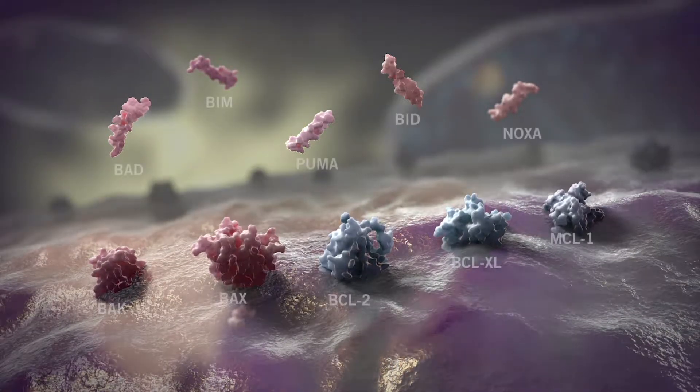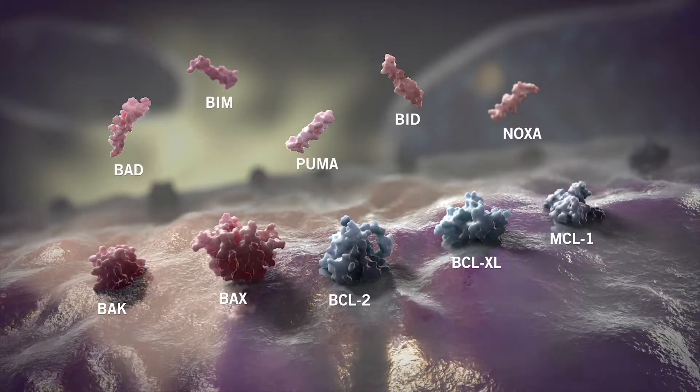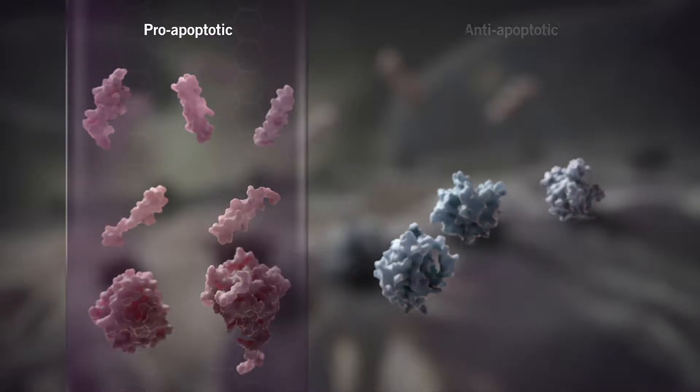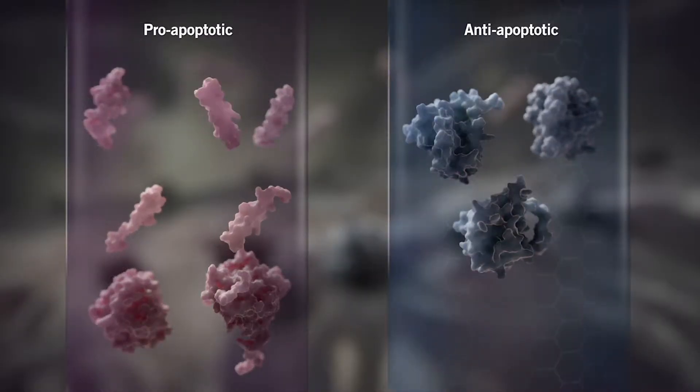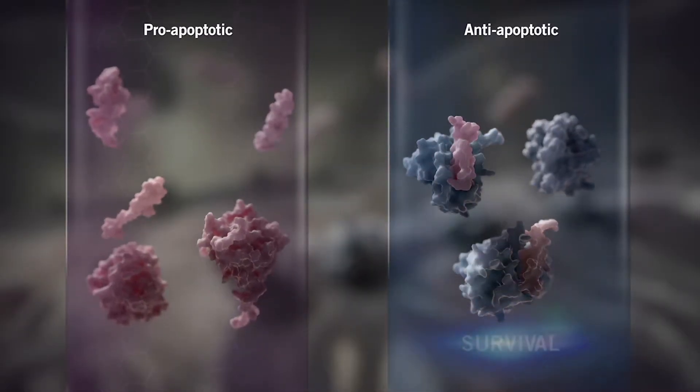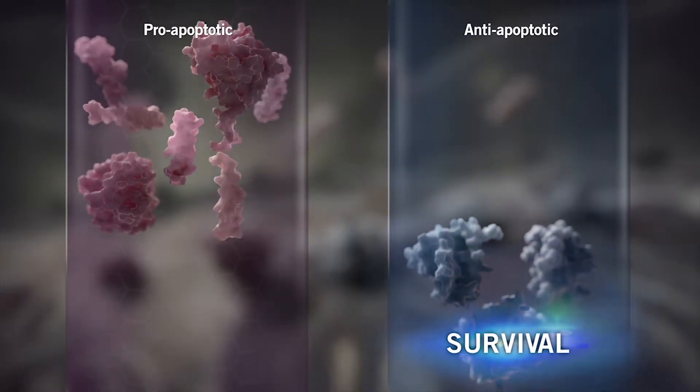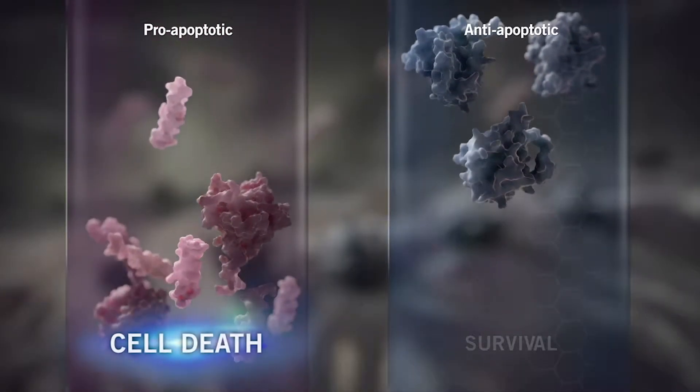BCL2 is a member of a larger family of structurally related proteins that are either pro-apoptotic or anti-apoptotic. The dynamic balance between anti-apoptotic members such as BCL2 and pro-apoptotic family members can determine whether a cell lives or dies.